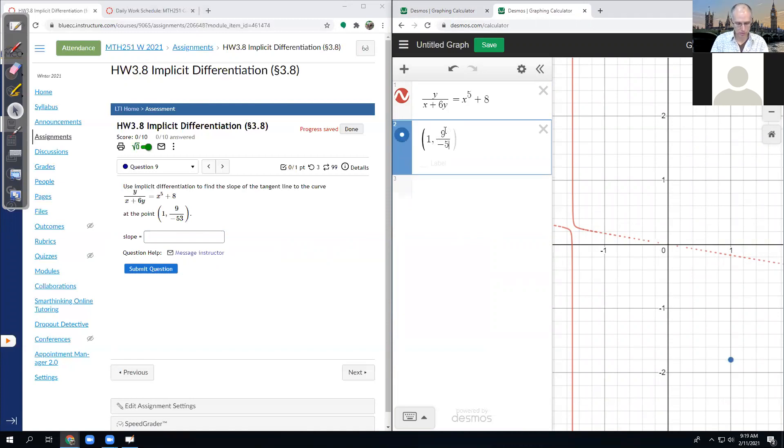9 divided by negative 53. Yeah, that's on there. But look, Desmos is really having a hard time graphing that. Imagine GeoGebra would have equal trouble graphing it. So we want to find the slope through there.